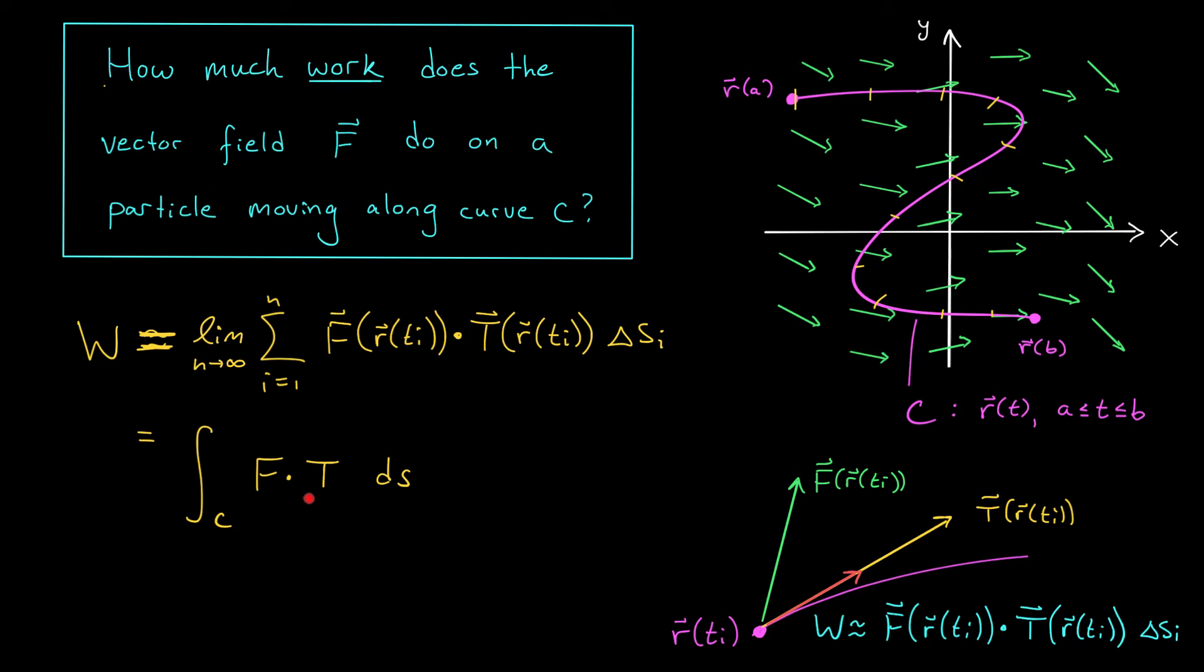But this is a line integral. F dot T, a dot product of two vector functions, is really a scalar function. So this is a line integral of a scalar field, something we know how to work with. Well, this is great, but in practice I don't really want to have to work with this function capital T. Remember, capital T tells us the unit tangent vector to our curve C at any given point. And honestly, I don't really want to compute that. So on the next slide I'm going to clean up this integral to get rid of that T, and then we'll define the line integral of our vector function.